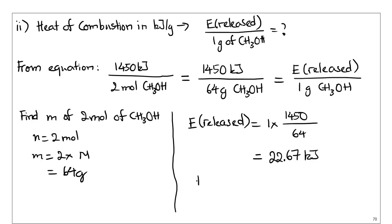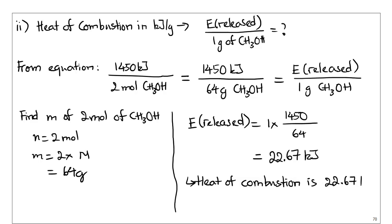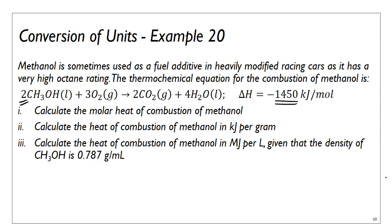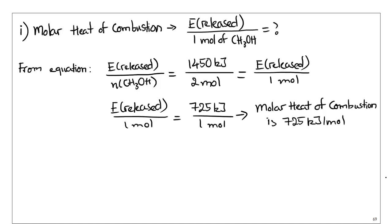The heat of combustion in kilojoules per gram is 22.67 kilojoules per gram. That's the answer for the second part. The last one is heat of combustion in megajoules per liter, and you're given the density.